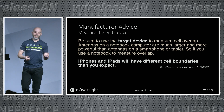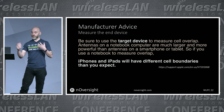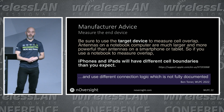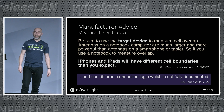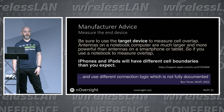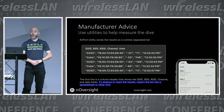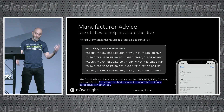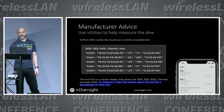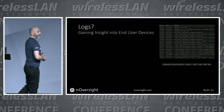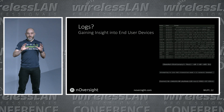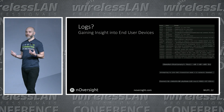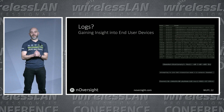The advice from the manufacturer is: use the target device. Antenna sizes are different, you get different cell boundaries based on the device, the way you hold it, the way you use it. We need to understand the connection logic which is not fully documented. What does the manufacturer give you? Tools? Not really. Airport Utility: RSSI and channel — not enough. And there's been a feeling in the industry that Apple devices are just a no-go, that we'll never really understand what they do.